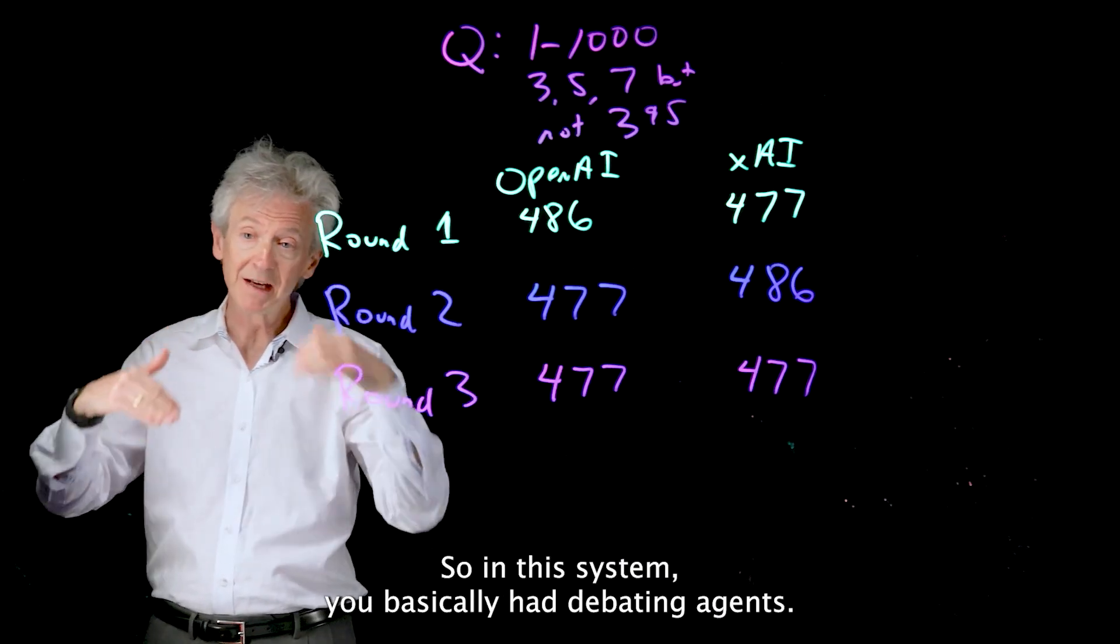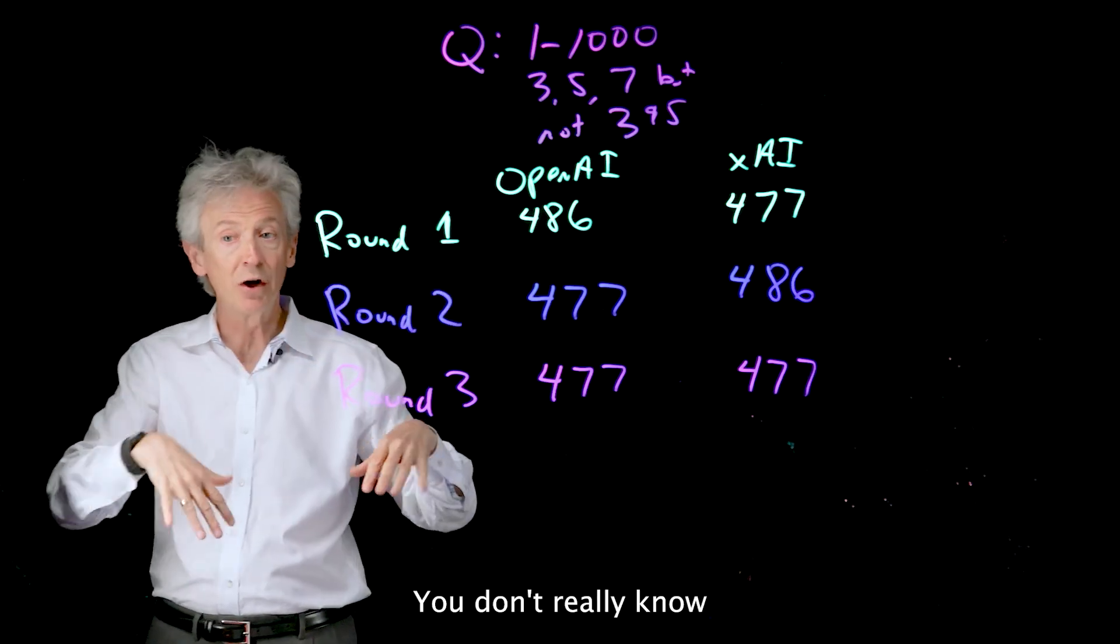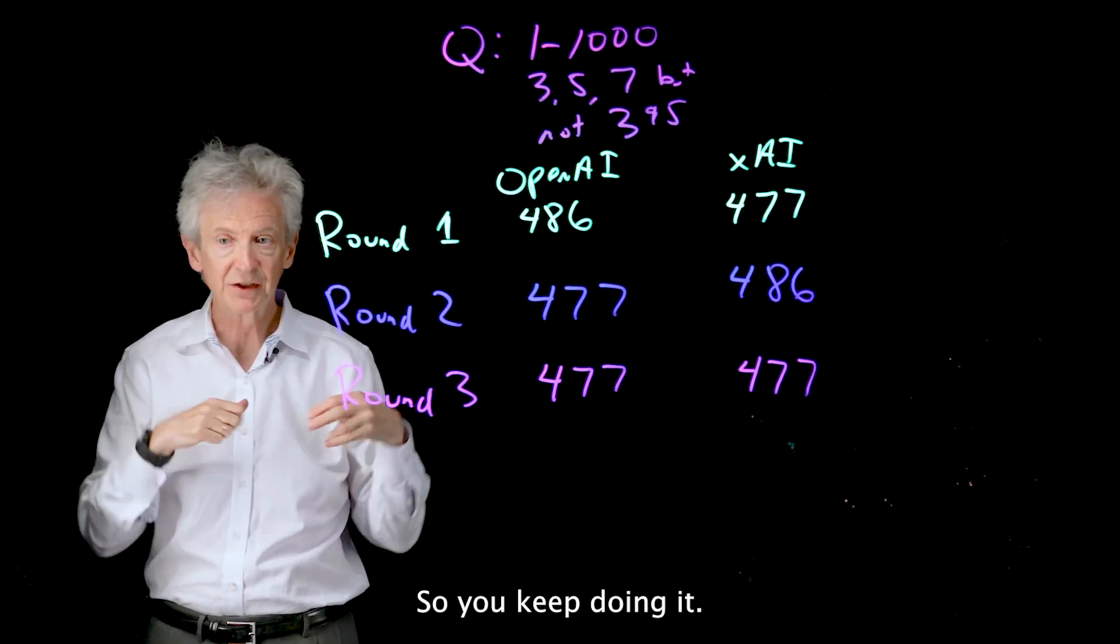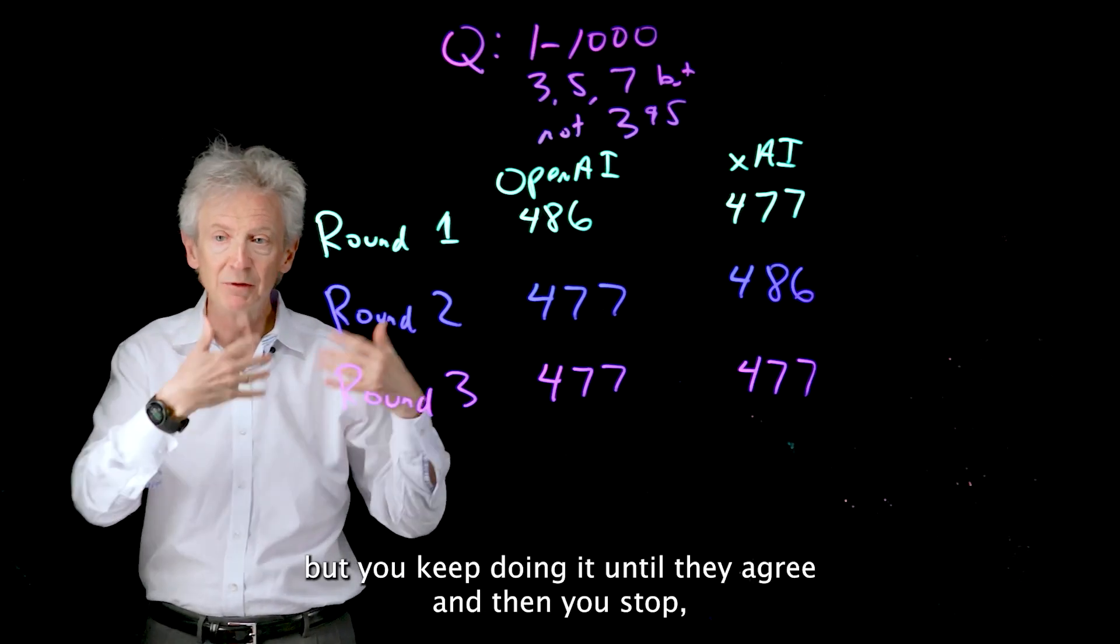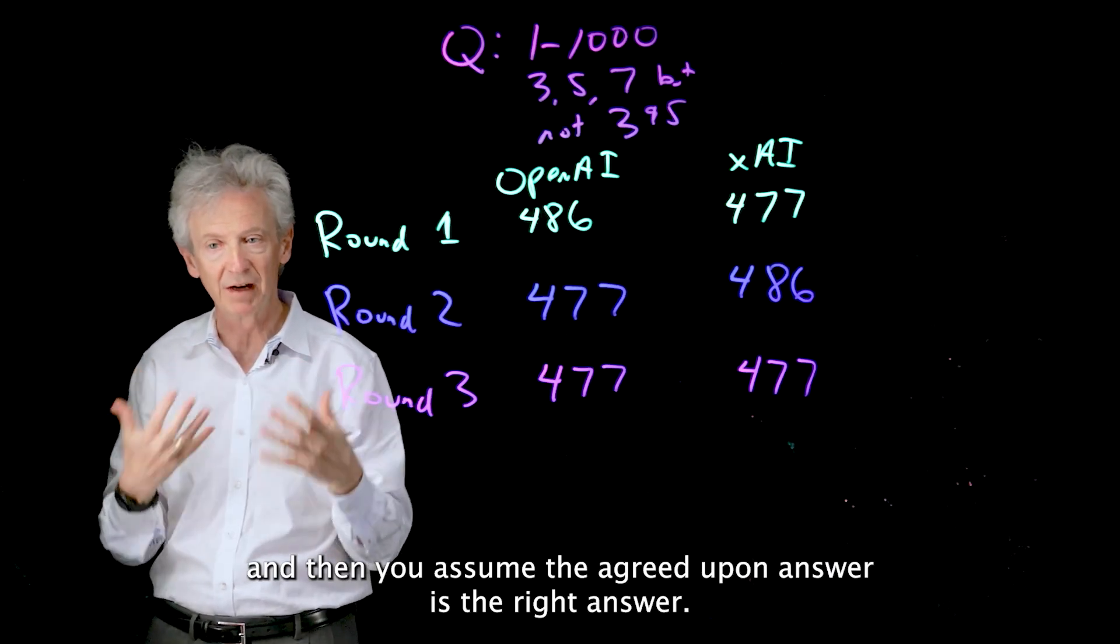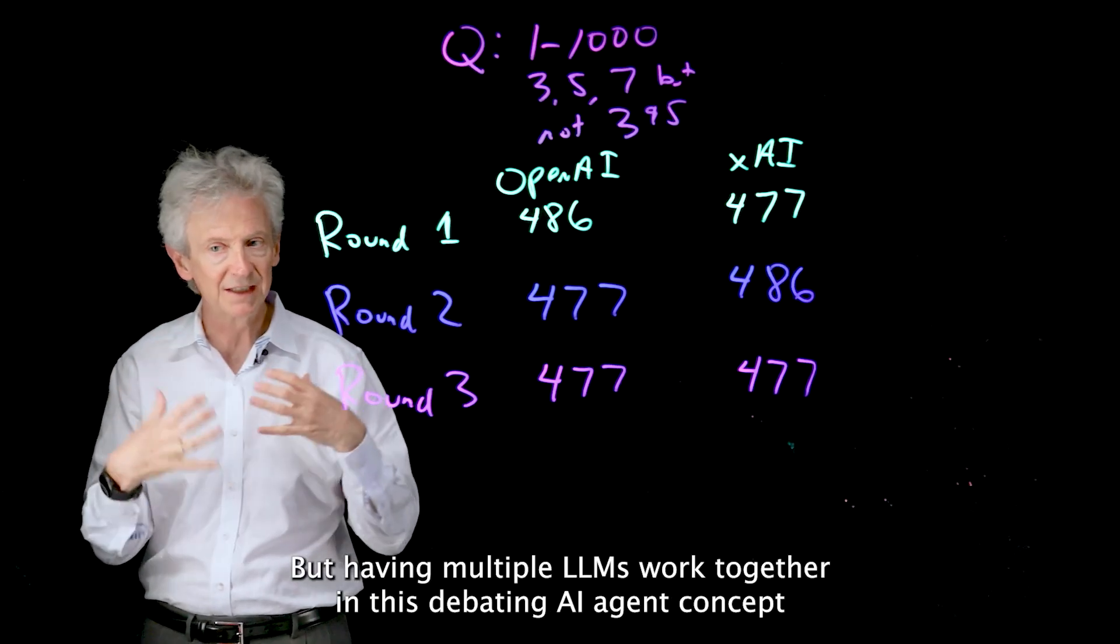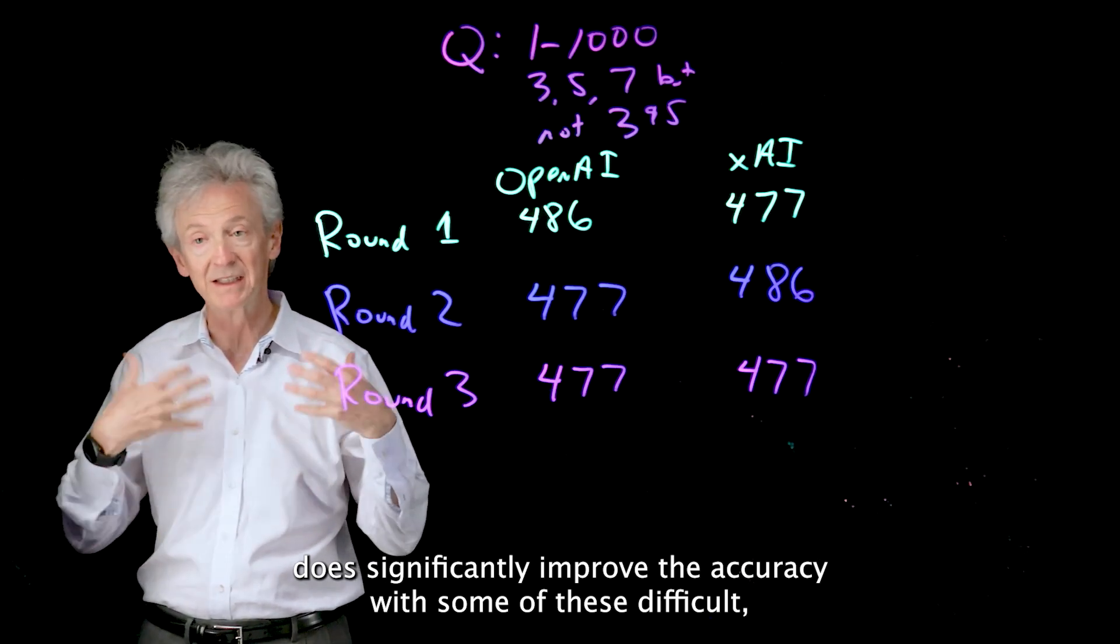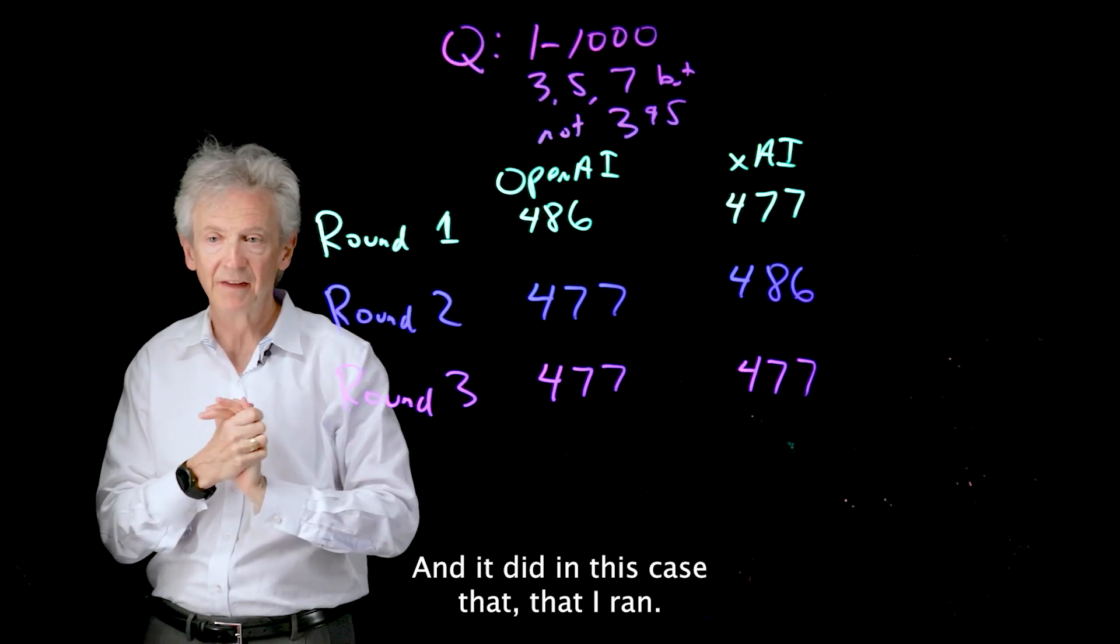So in this system, you basically had debating agents. There's some non-deterministic aspect of this. You don't really know how many rounds it's going to take for these two agents to agree. So you keep doing it. You might have a limit of 10 rounds or something like that. But you keep doing it until they agree. And then you stop. And then you assume the agreed upon answer is the right answer. That's not guaranteed. But having multiple LLMs work together in this debating AI agent concept does significantly improve the accuracy with some of these difficult problems. And it did in this case that I ran.